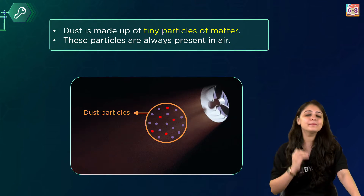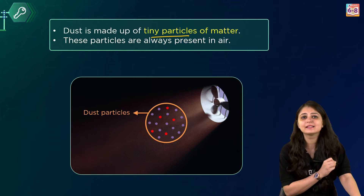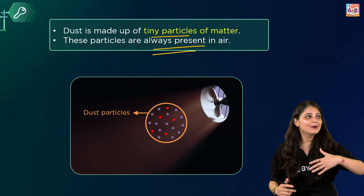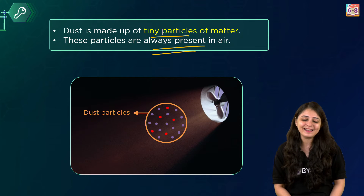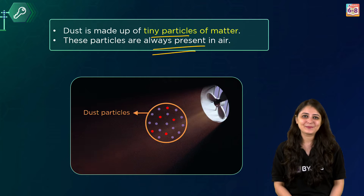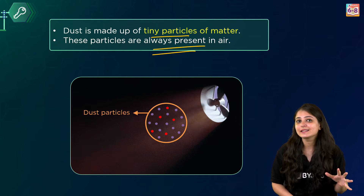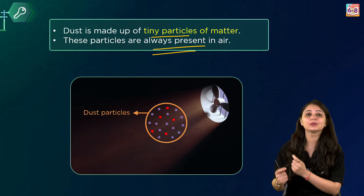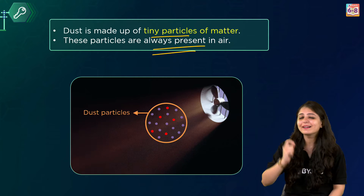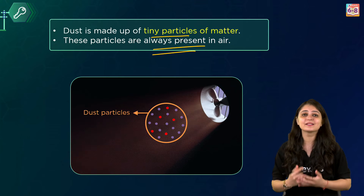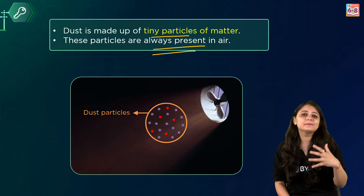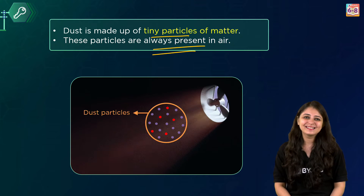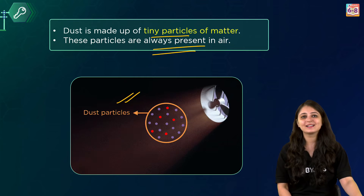Dust is made up of tiny particles of matter, and it is always present in air. It can be found all over the place — on shelves, under your bed, on your toys, and even floating in the air. Dust isn't just on surfaces; it can also float in the air. Sometimes you can see dust particles when sunlight shines through a window. In fact, some people are allergic to certain types of dust. It's a natural part of our environment.